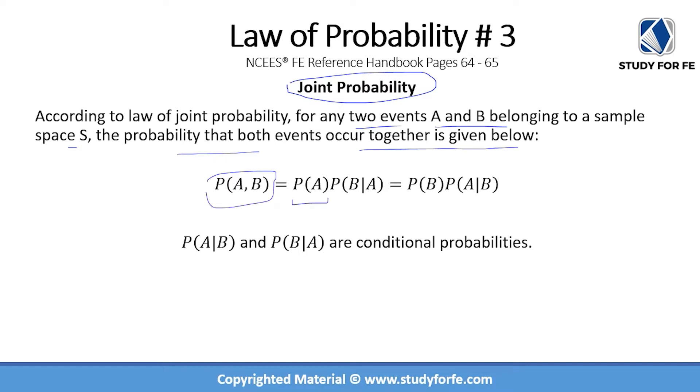So probability of A comma B equals probability of A times probability of B given that A has already occurred. This symbol or notation is very important to understand, and this is equal to probability of B times probability of A given that B has already occurred.